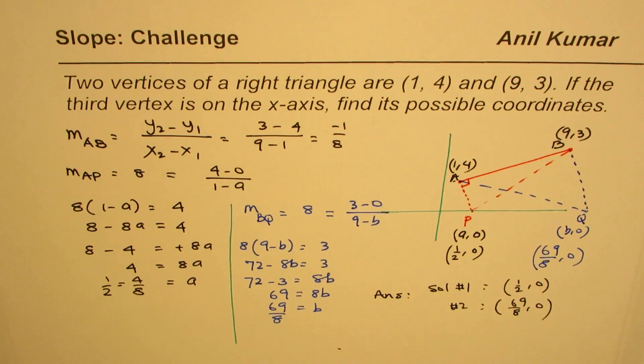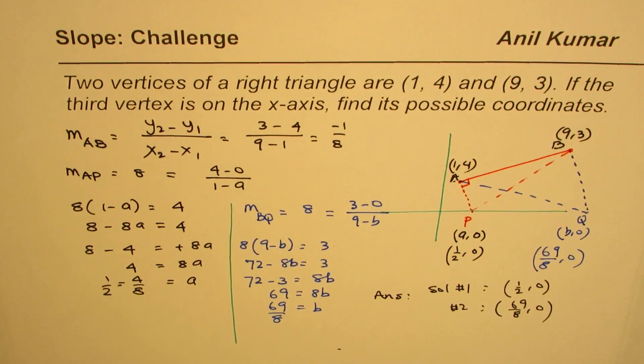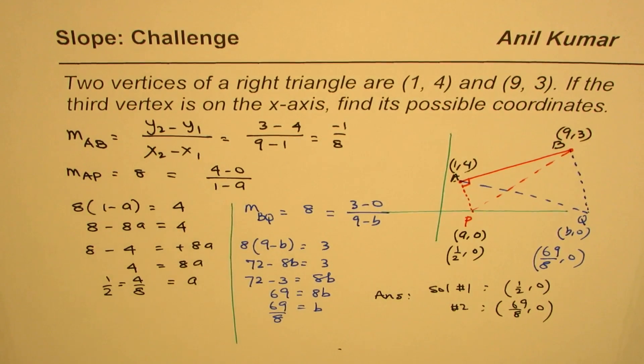So that is how you can solve this question. Remember, perpendicular lines will have negative reciprocal slopes. When you multiply their slopes you should get -1, and that is the concept which helps us to solve such questions. I'm Anil Kumar. You can subscribe and share my videos. Thank you and all the best.